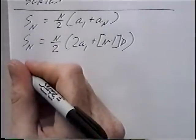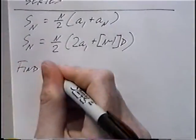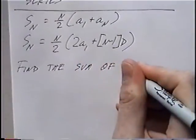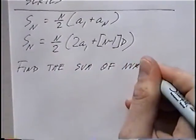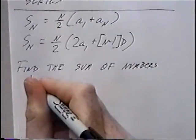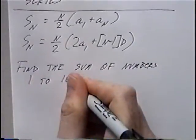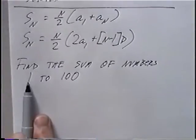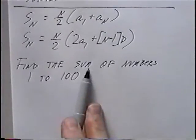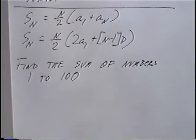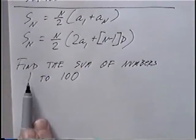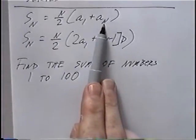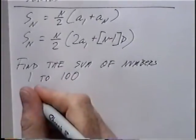For the first question, we're going to find the sum of the numbers 1 to 100. We start at 1 and count all the numbers up to 100, finding the total of all those numbers. In this case, we know the first term and the last term — a sub 1 and a sub n — so we'll use the first formula.